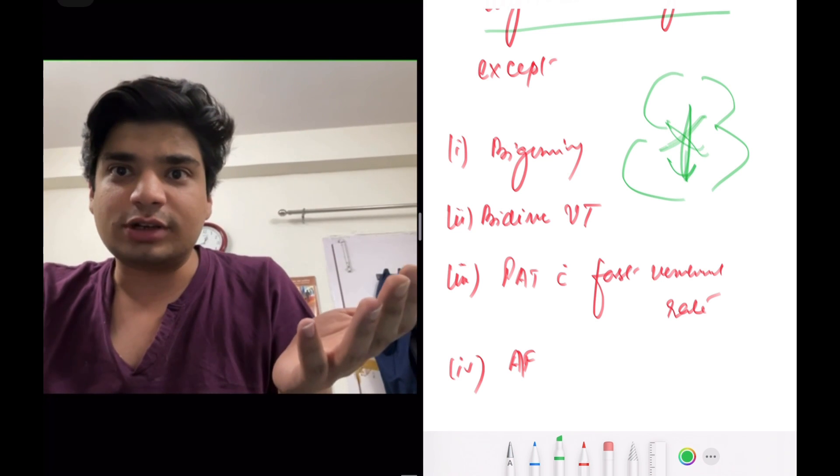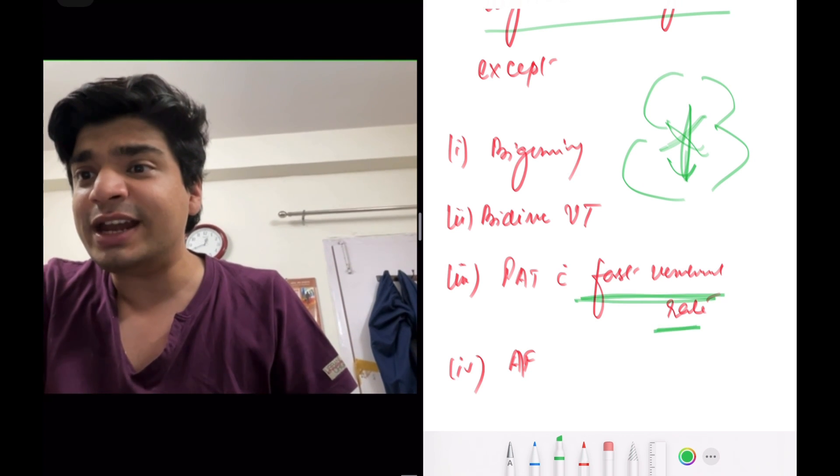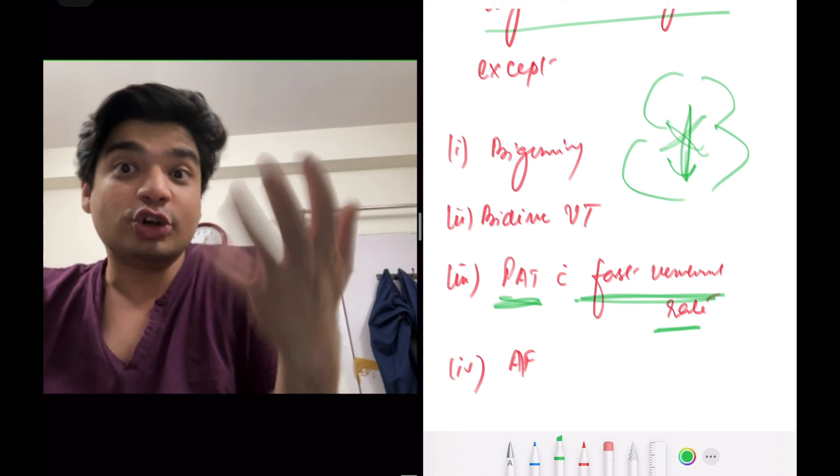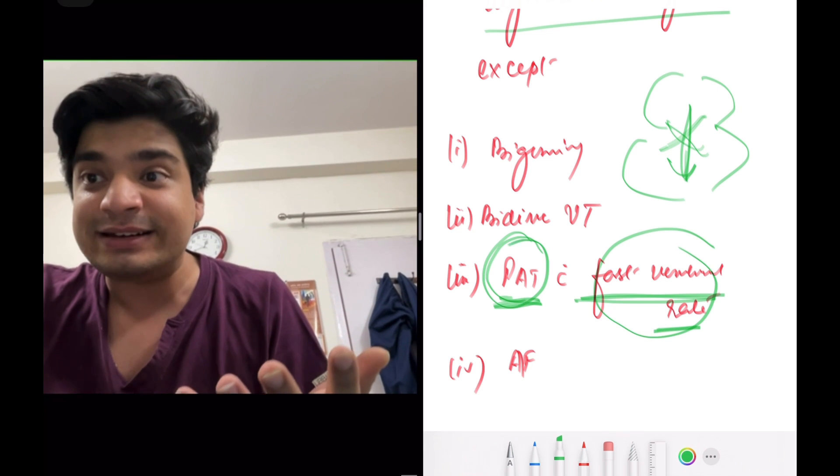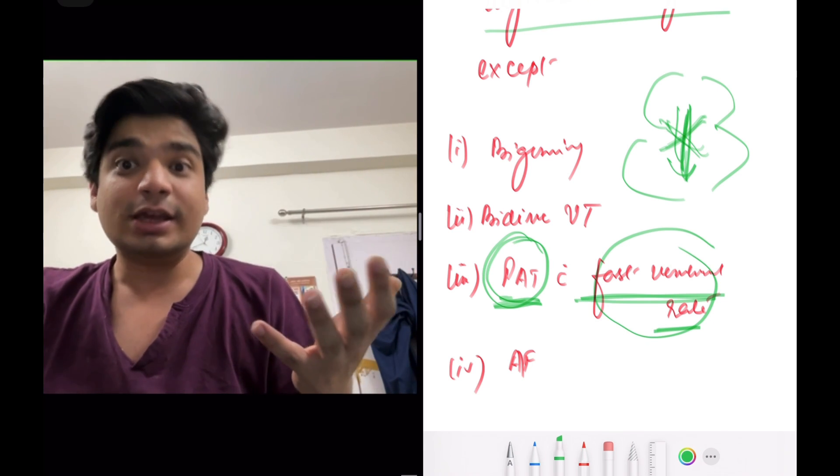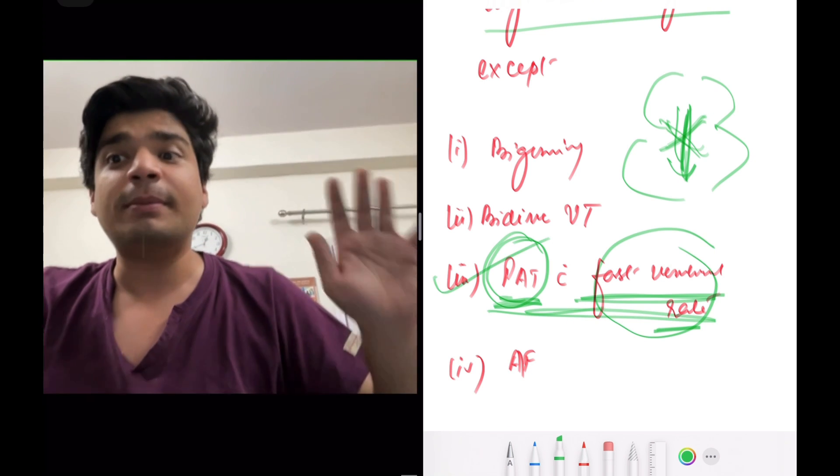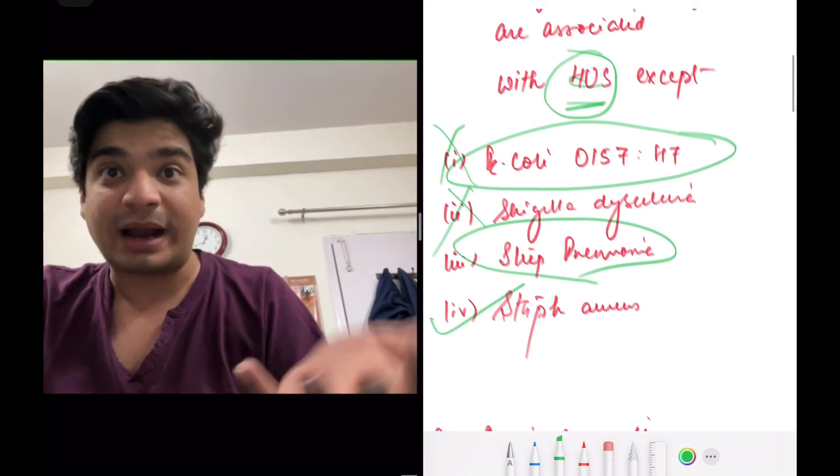It blocks AV conduction. If it blocks AV conduction, we have an option which says fast ventricular rate with paroxysmal atrial tachycardia, this is not possible. This should not be possible with digitalis, because if you're having fast ventricular rate with atrial tachycardia, why is it not causing AV conduction block there? It will cause AV conduction blocks. So this thing most likely won't be possible. And I would have marked this answer as correct. Even if I didn't know the answer to this question before and not practice this question beforehand.